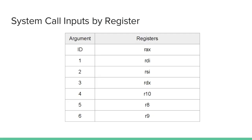The first argument is the RDI register, then the second argument is the RSI register, then RDX, then R10, R8, and R9. So if you want to use a syscall, you would load the ID into the RAX register, then load your arguments into registers 1 through 6, and then you would use your syscall.